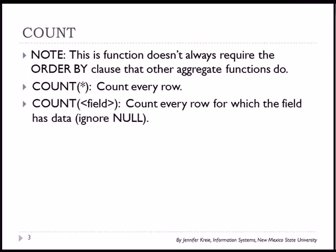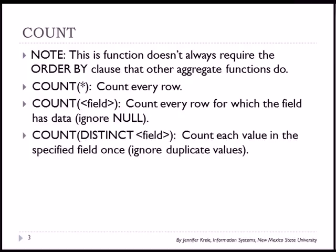You can also use count and specify a field in place of the asterisk. This will count every row for which the field has data. It will ignore null values. Then there's also count distinct, and then you specify which field. This will count each value in the specified field once and it will ignore duplicate values.